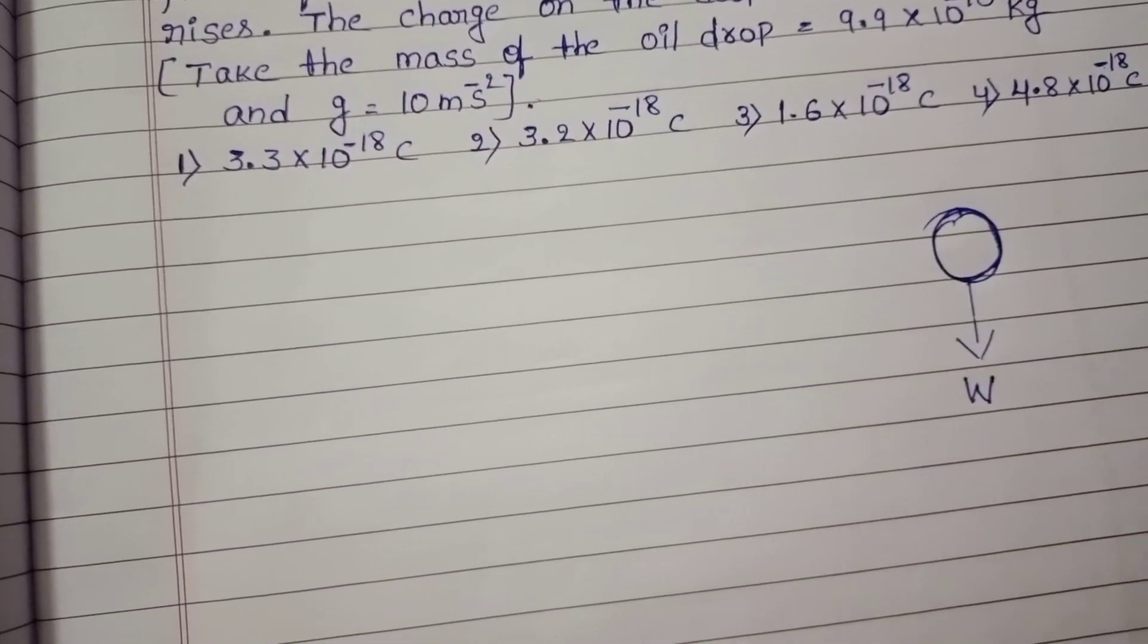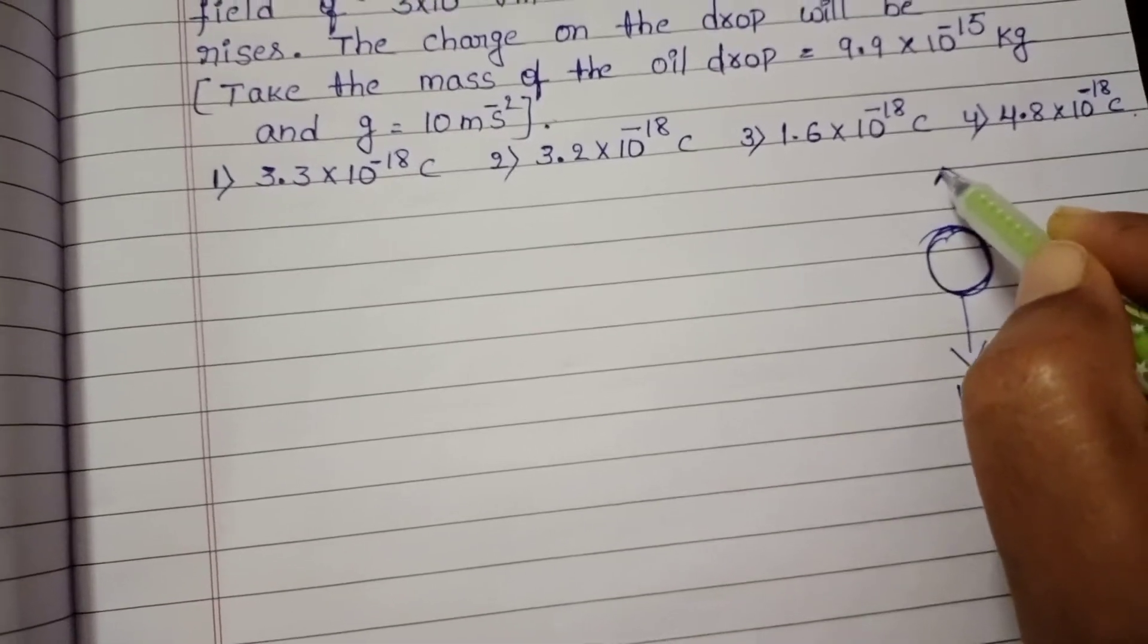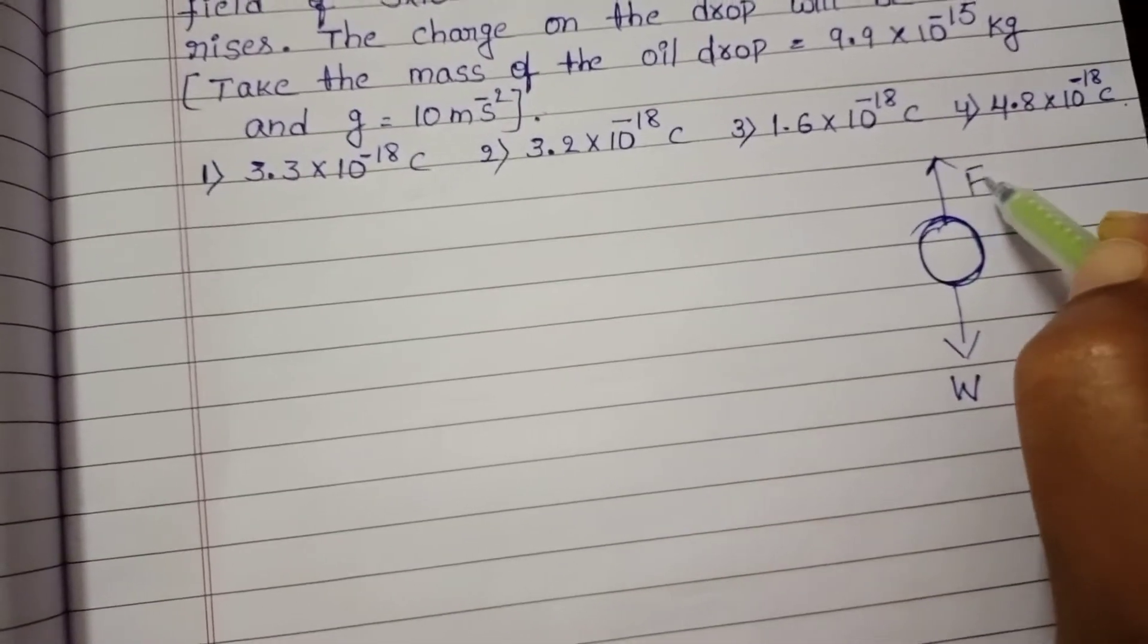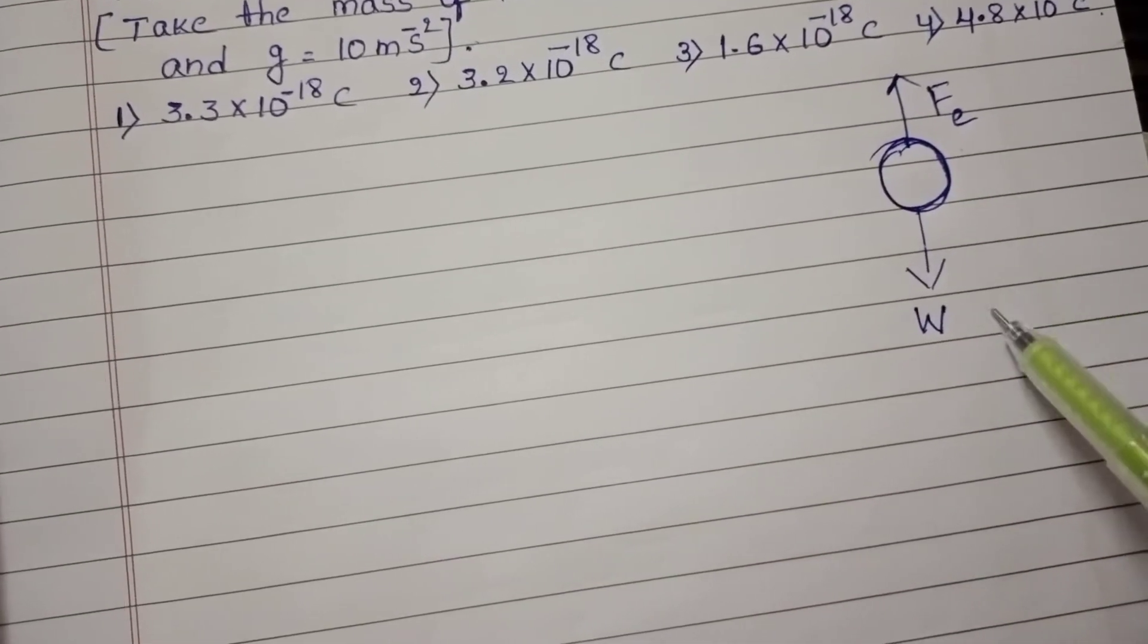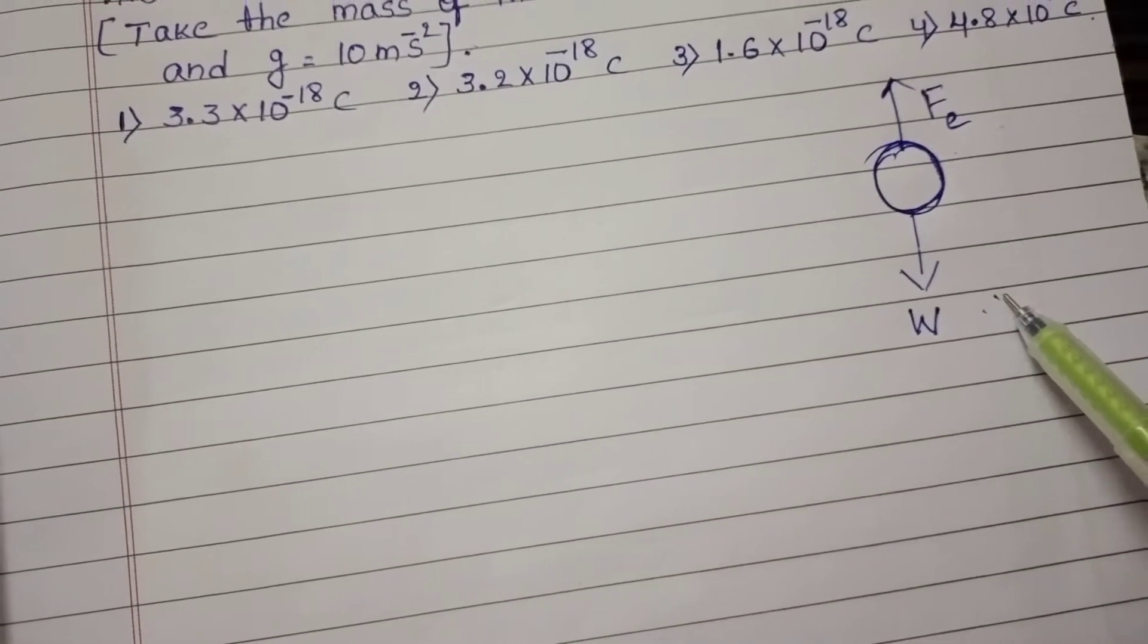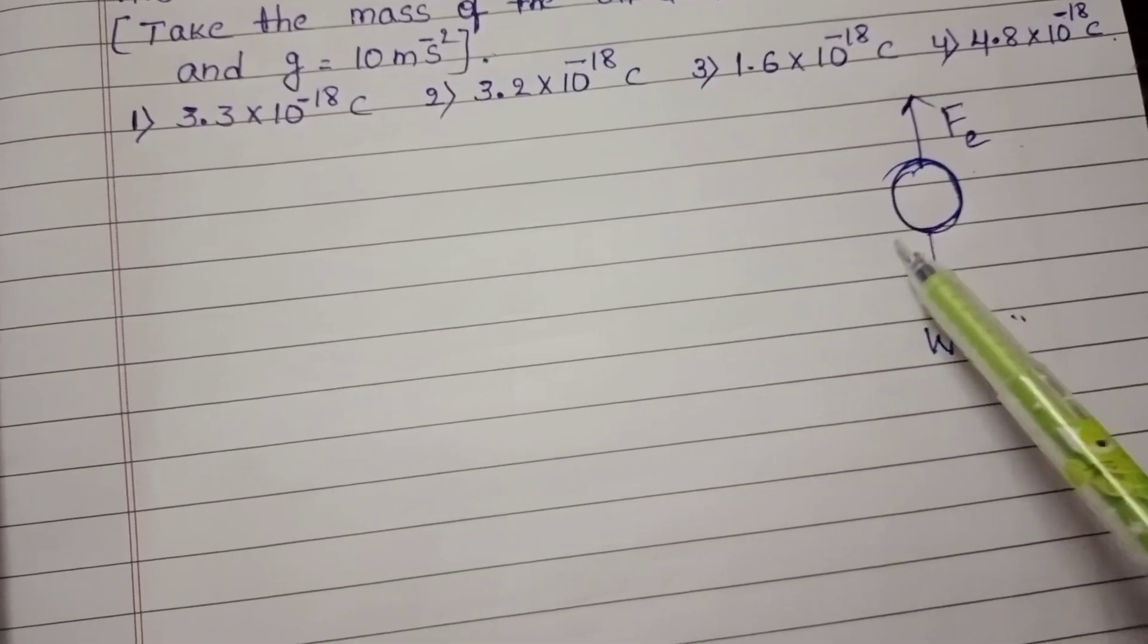External electric field exerts electrostatic force in upward direction. These two forces equal in magnitude and opposite in direction, then this oil drop gets the equilibrium position.